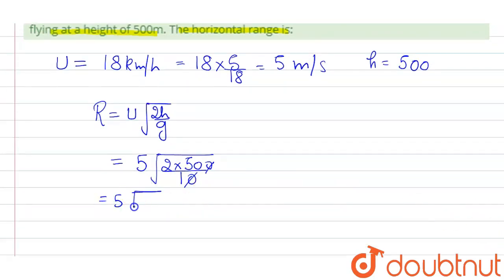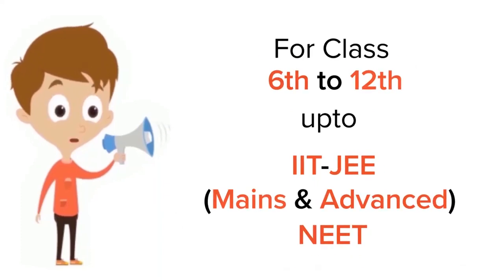5 root 100, and 100 root is 10, so that means it becomes 50 meter. So the final answer will be range equals 50 meter. I hope that answers your question. Thank you. For class 6 to 12, IIT-JEE and